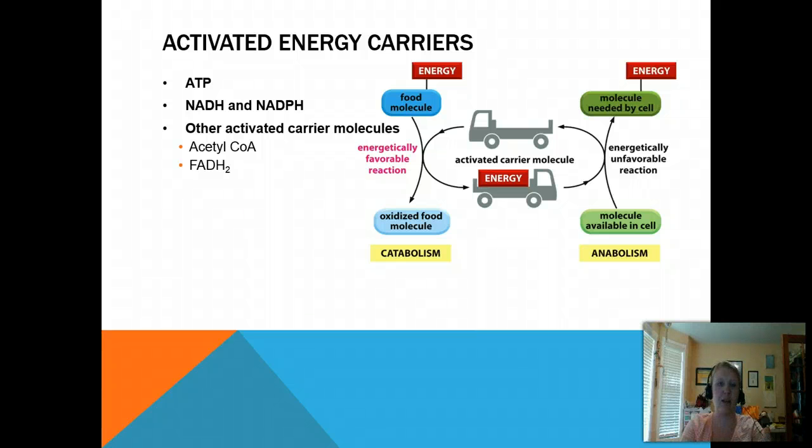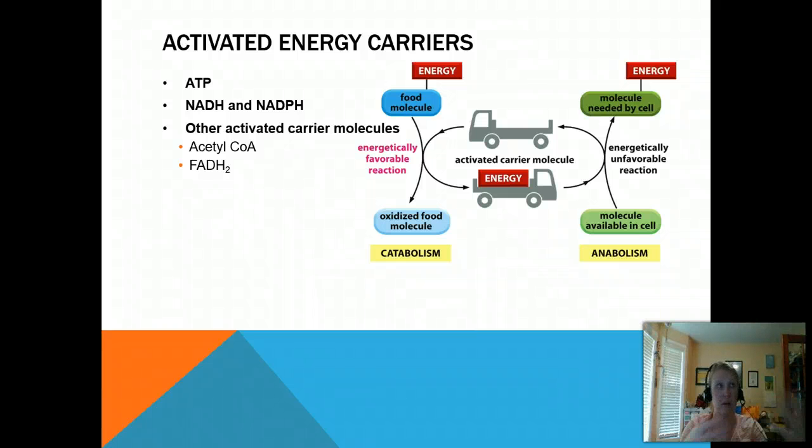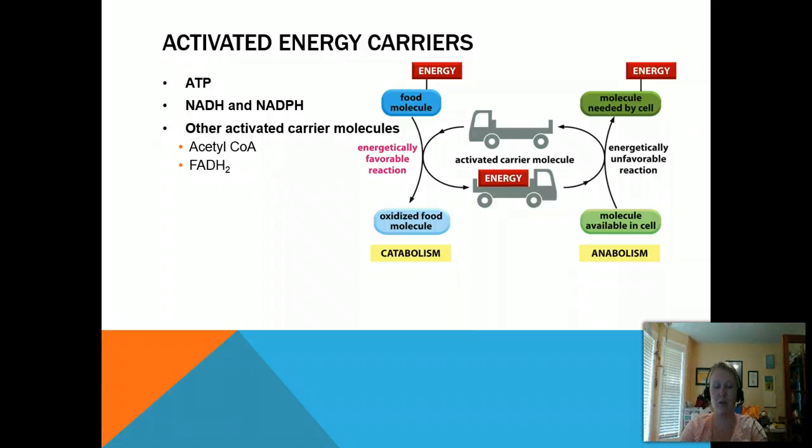So what do these activated carriers do? They simply carry the energy from one reaction to another. This is how the cell couples those reactions. It moves the energy from energetically favorable reactions such as breaking down food, creating more disorder, shuttles that energy over to an energetically unfavorable reaction such as creating a new lipid membrane. And so that's how this works. It shuttles between catabolism and anabolism creating the circle or the cycles of metabolism.